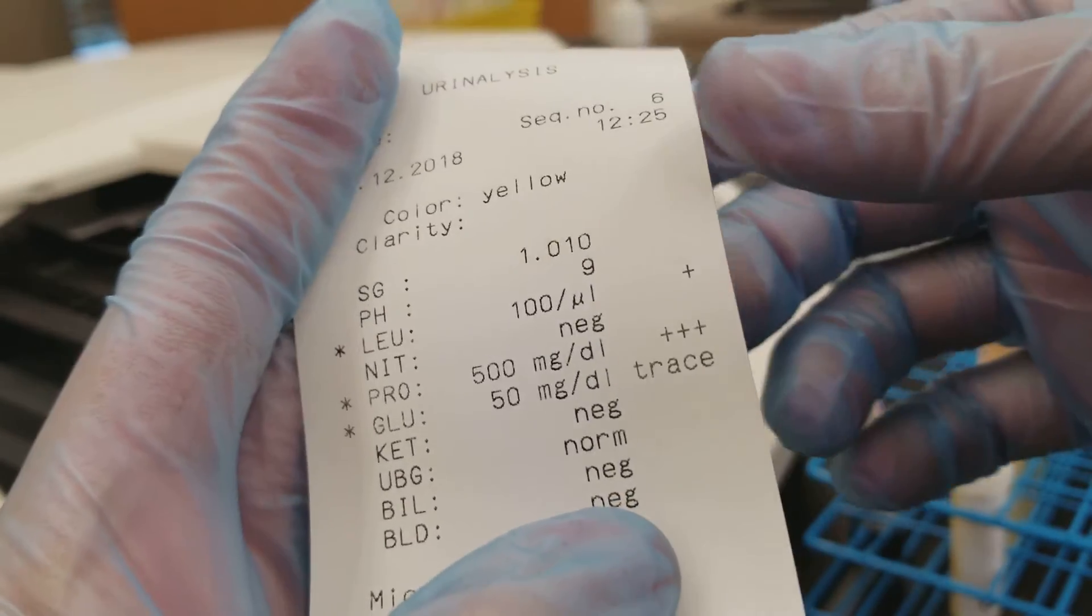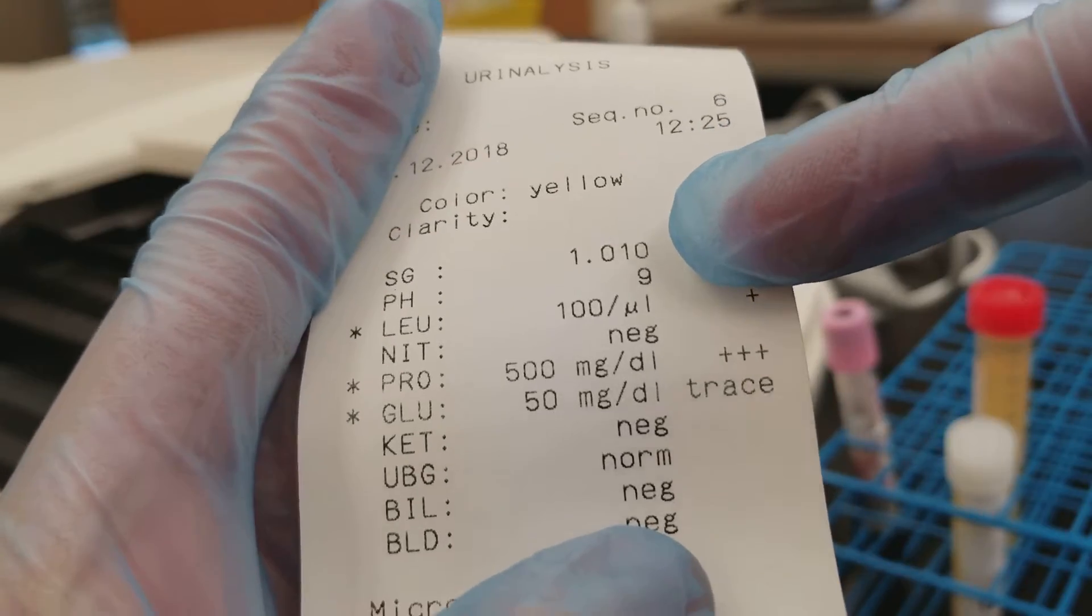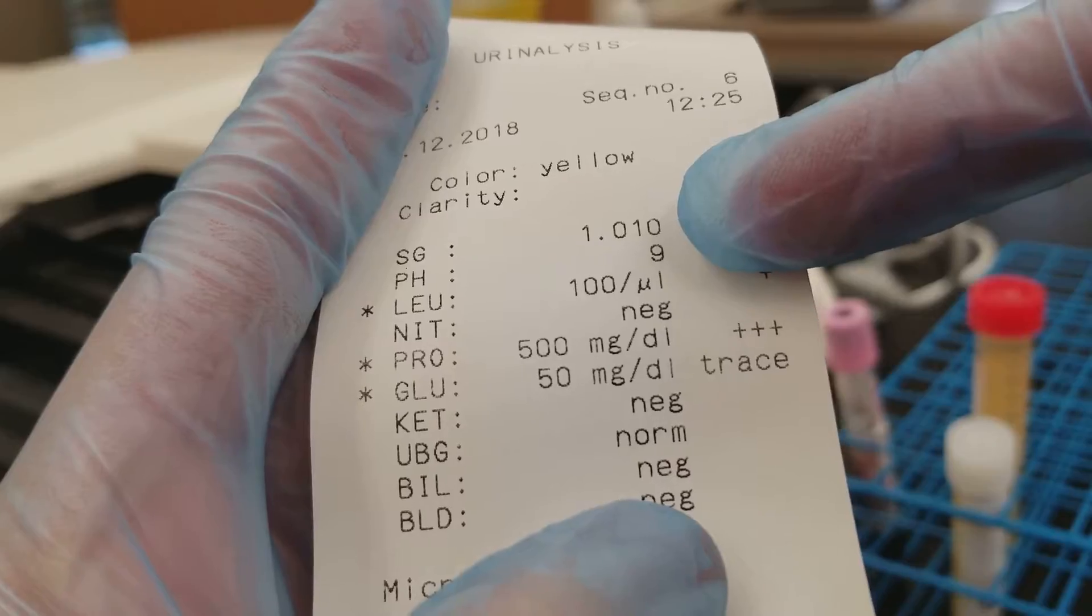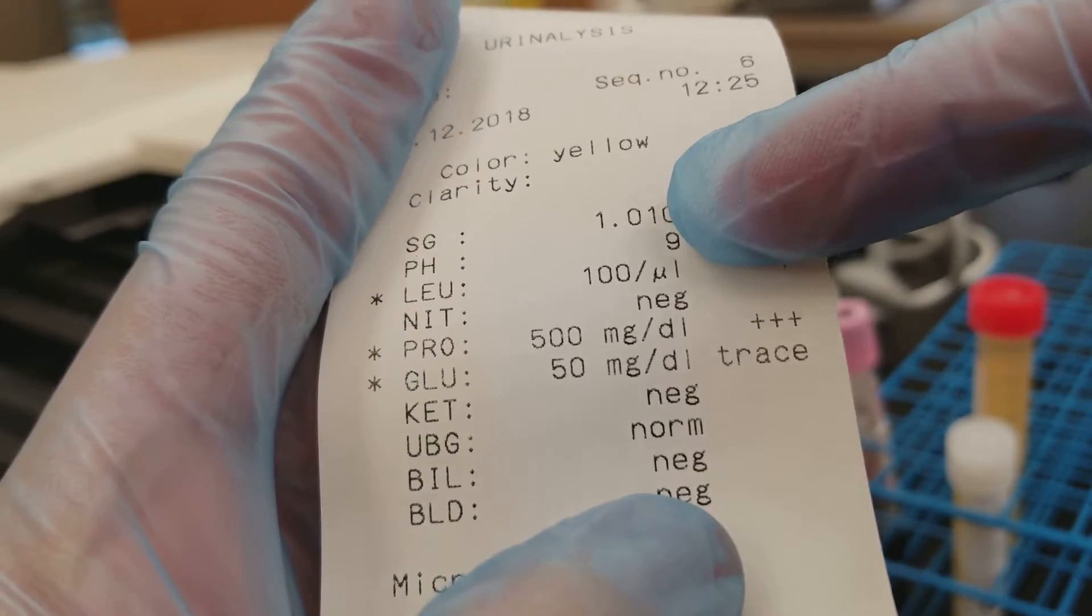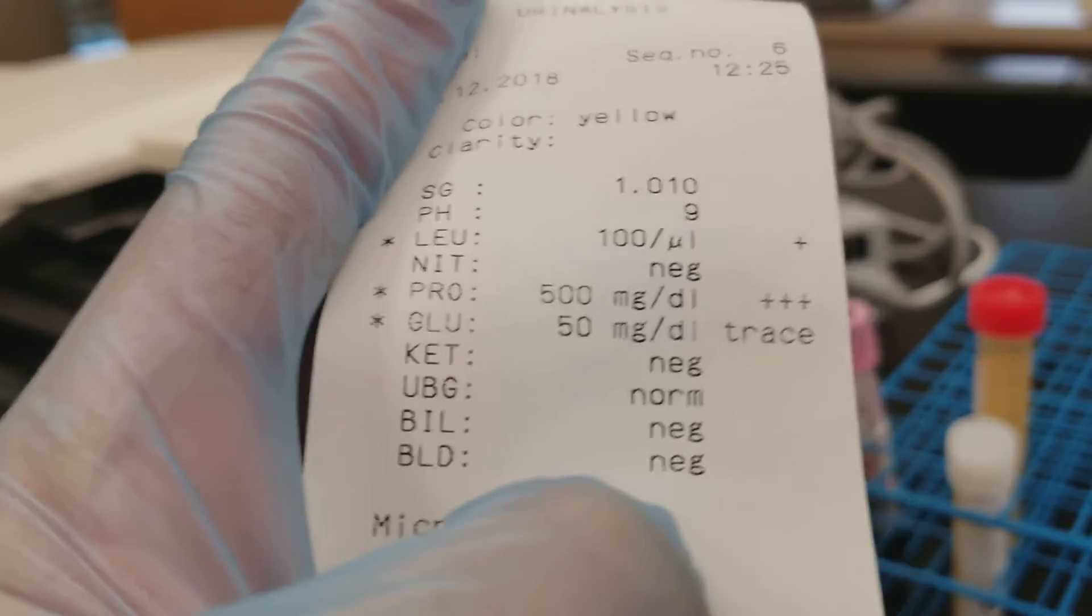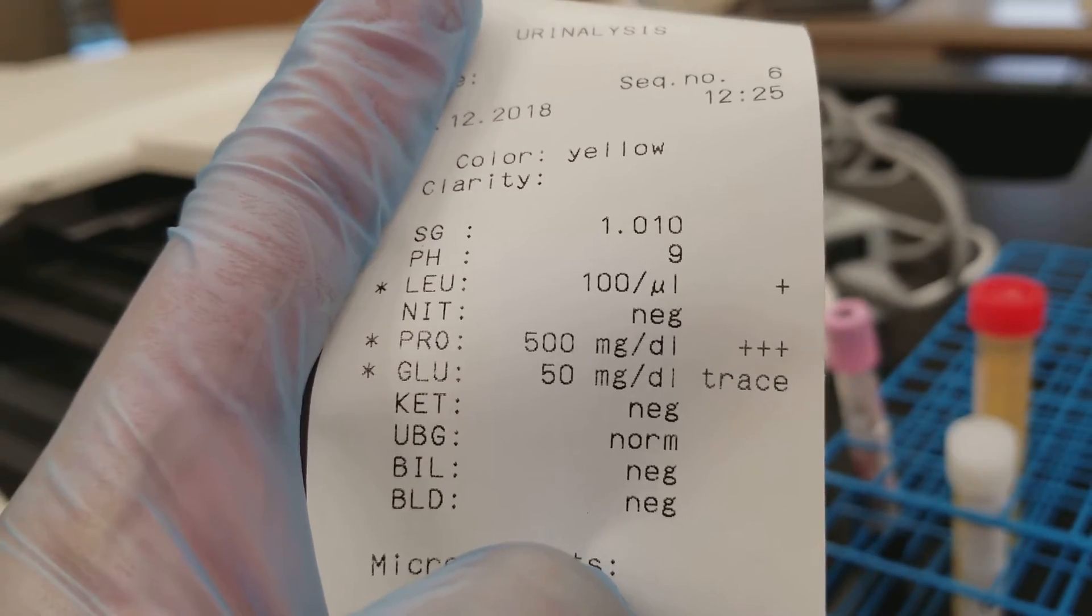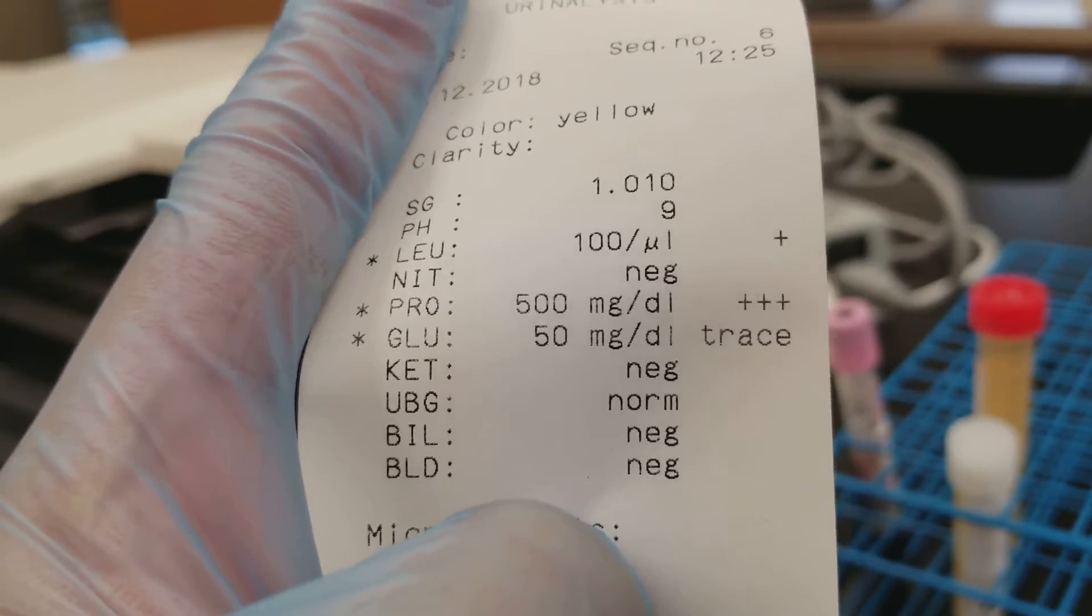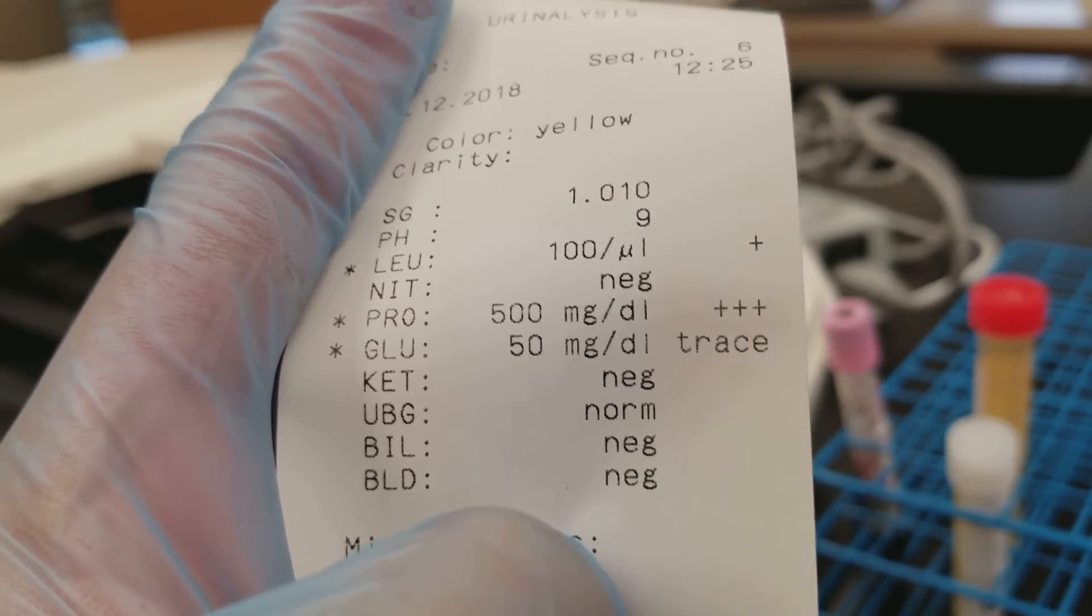This one has an isotonic specific gravity which means that the urine is the same specific gravity as the blood which is crazy. So that means that there isn't, that the nephron isn't necessarily concentrating the urine. Okay we have a pH of nine.